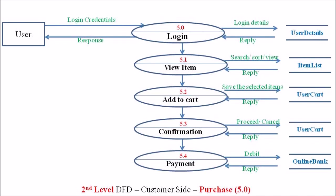This confirmation process is represented in an ellipse with number 5.3. The final process is the payment process, 5.4, represented in the last ellipse. The payment process deals with online transactions and payment, associated with the data store area — the online banking database.